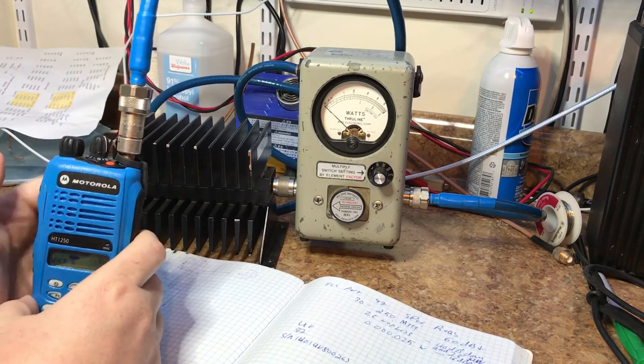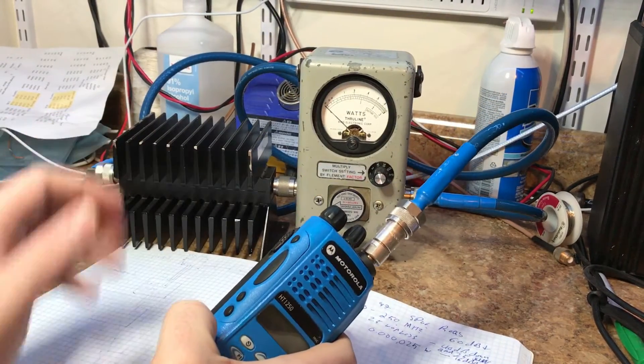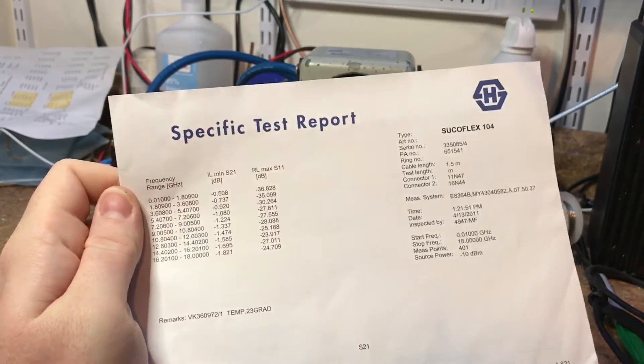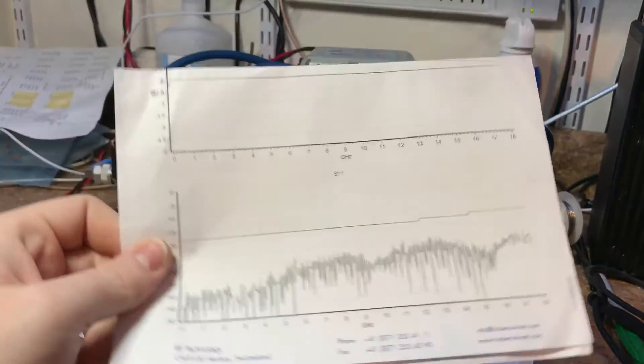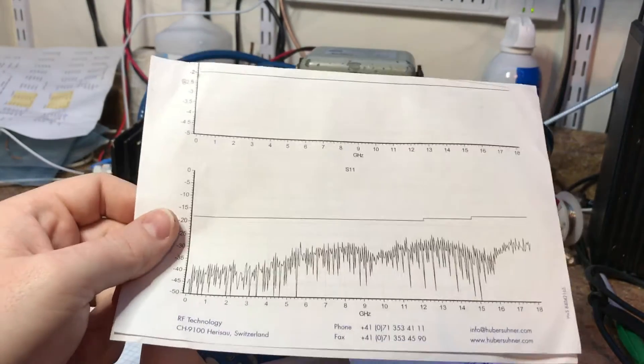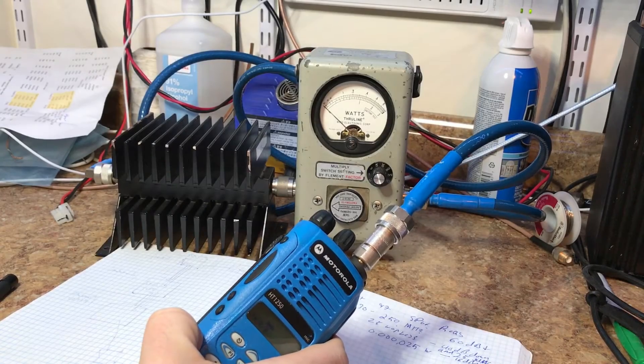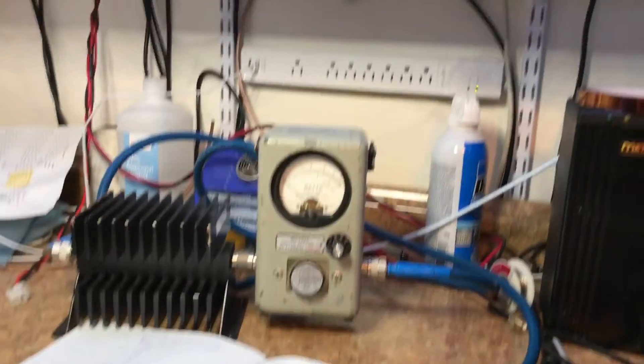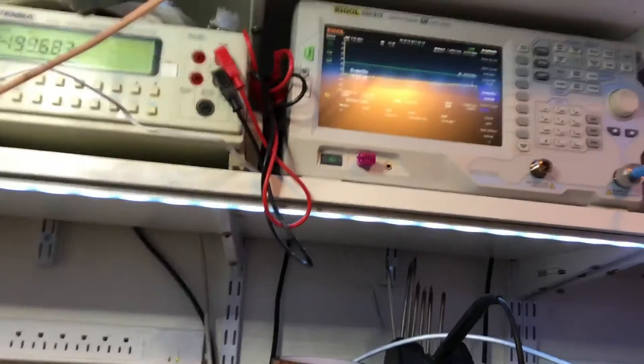30 dB attenuator. The output of the 30 dB attenuator goes through this particular Sucoflex test cable right here. This actually matches the serial number that's on there. It's the proper one, same as it was before. And that goes up into the spectrum analyzer. The spectrum analyzer is right up there. I'll put this video on there in a second.